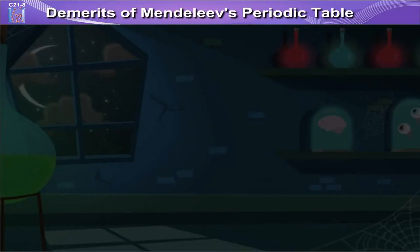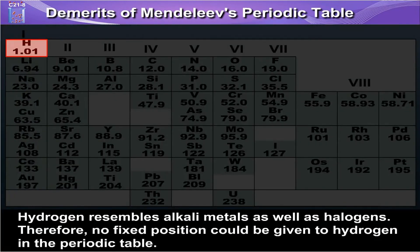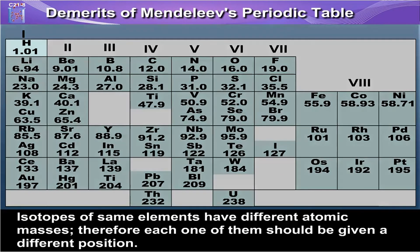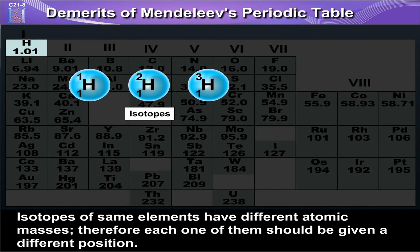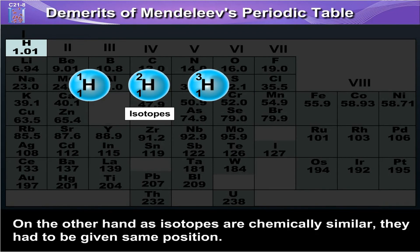Demerits of Mendeleev's periodic table: Hydrogen resembles alkali metals as well as halogens; therefore, no fixed position could be given to hydrogen in the periodic table. Isotopes of the same elements have different atomic masses; therefore, each one of them should be given a different position. On the other hand, as isotopes are chemically similar, they had to be given the same position.